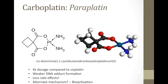Another molecule in the cisplatin family is carboplatin, marketed as Paraplatin. It is very similar to cisplatin, except instead of two chloro groups, it has a dicarboxylate group. This dicarboxylate group essentially weakens the ability of the molecule — it forms weaker DNA adducts, requiring about four times the dosage of cisplatin for the same effect. However, because of this, a lower effective dosage leads to less severe side effects such as nausea and vomiting. It's also believed that carboplatin activates an alternate mechanism through bioactivation rather than purely DNA inhibition.